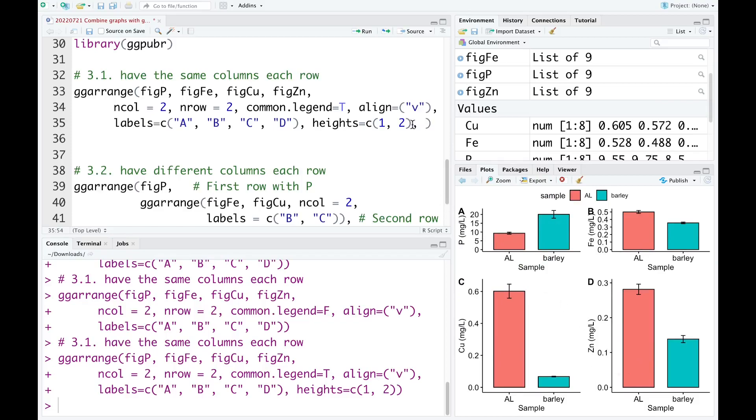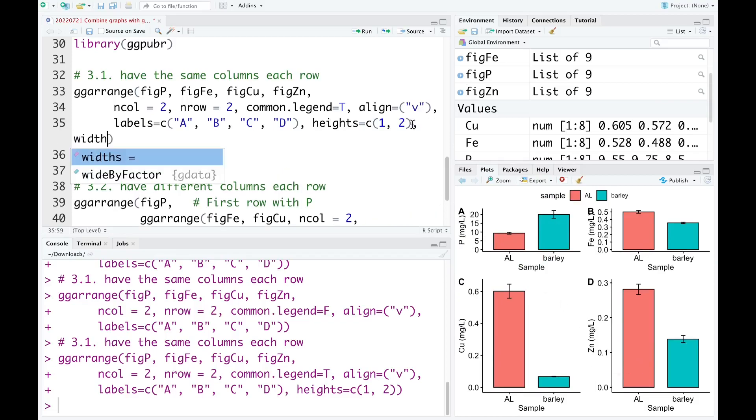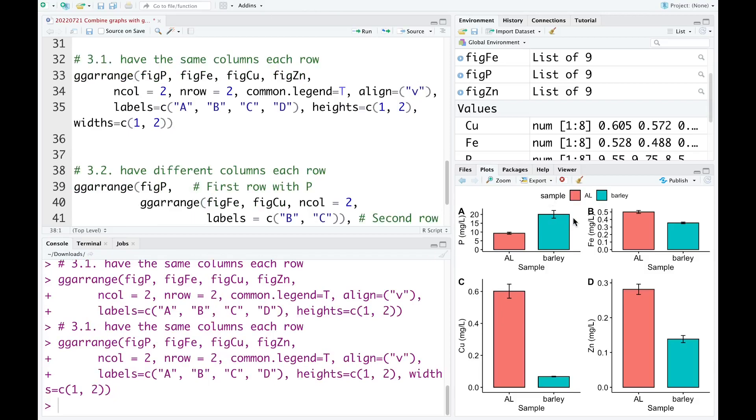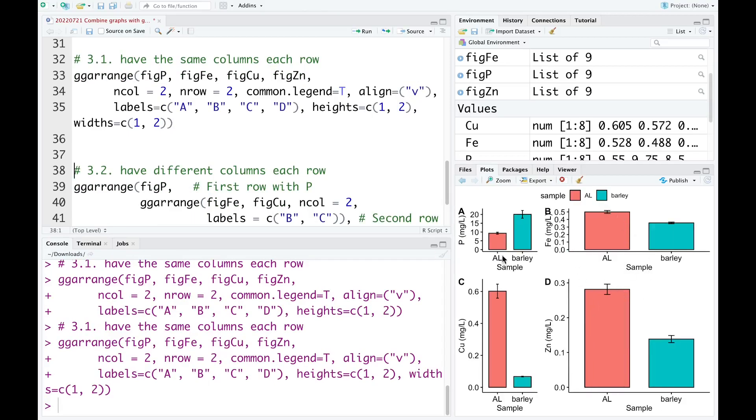You can also change the width of the column. Now I hit run. As you can see, the width of the first column now is just half of the second column.